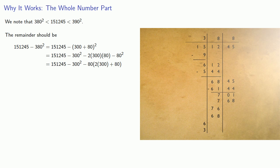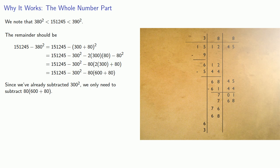And 2 times 300 is 600. Notice that since we've already subtracted 300 squared, we only need to subtract 80 times (600 + 80). But if we multiply that out and break this product into cycles of two digits apiece, we see that this is the second subtraction we did.